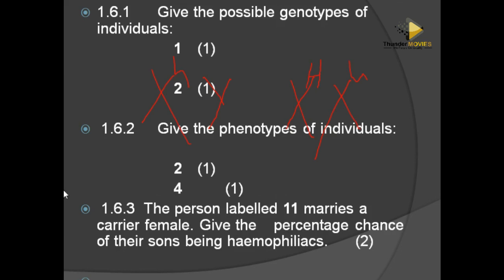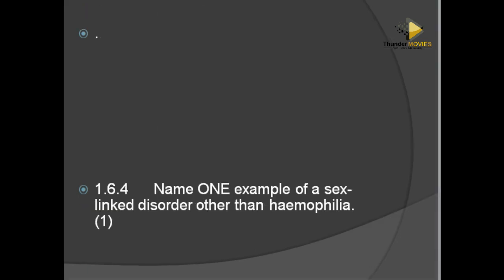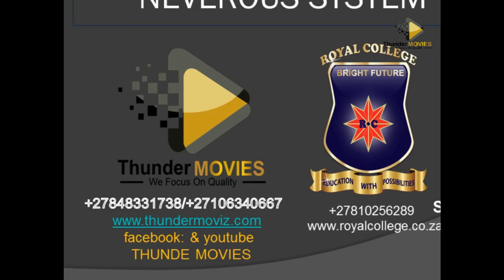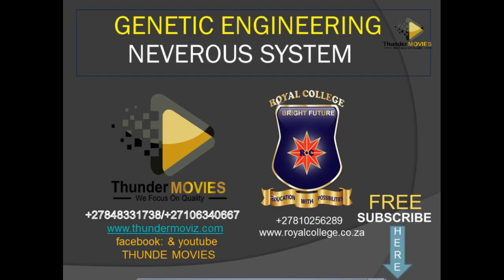Individual number 11 marries a carrier female — a carrier is heterozygous, carrying the recessive allele without showing it. The cross gives: one sick boy, one normal boy, one affected girl, and one normal girl. The percentage chance of sons being hemophilic: one sick son out of four total offspring gives 25%. An example of another sex-linked disorder other than hemophilia is colorblindness. We will return for the next class on genetic engineering, followed by the nervous system. Thank you for watching, and don't forget to subscribe.